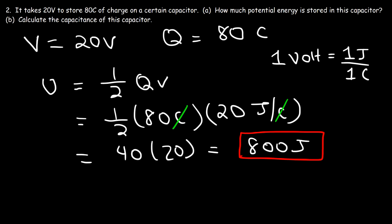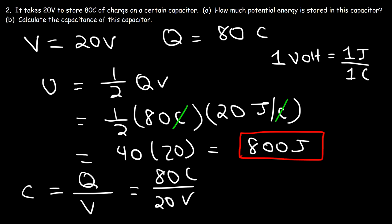Now let's calculate the capacitance of this capacitor. The capacitance is the ratio between the charge stored divided by the voltage. So we have 80 coulombs divided by 20 volts, which equals 4 coulombs per volt, or 4 farads.